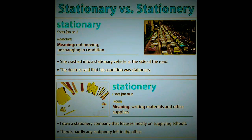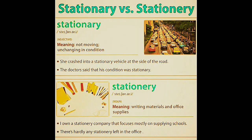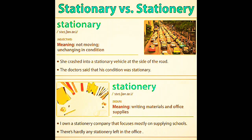Stationary vs. Stationery. 'Stationary' (S-T-A-T-I-O-N-A-R-Y) is an adjective meaning not moving or unchanging in condition. For example: she crossed into a stationary vehicle at the side of the road; the doctor said that his condition was stationary. On the other hand, 'stationery' (with an E) is a noun meaning writing materials and office supplies. Example: I own a stationery company that focuses mostly on supplying schools; there is hardly any stationery left in the office.